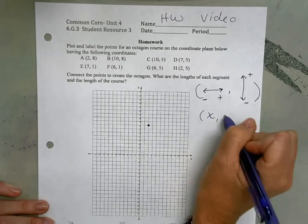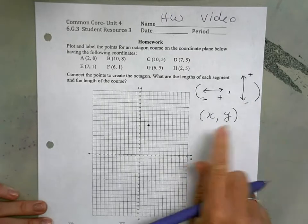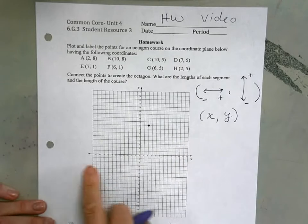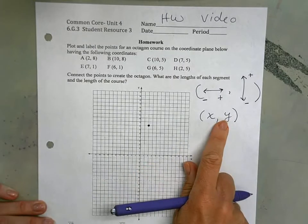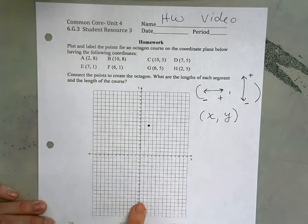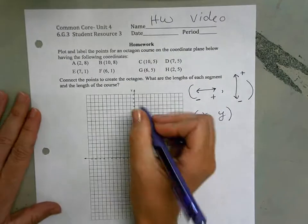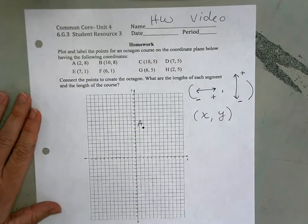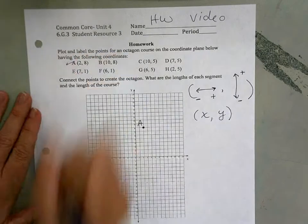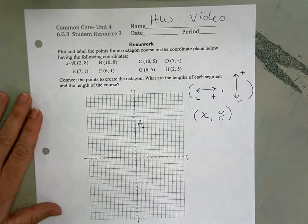And our second value tells us to go up if it's positive, or down if it's negative. And that's how we write down our ordered pairs, our x value along the x-axis, and then our y value along the y-axis. That's my point A, and so I don't get confused, I'm going to make sure I label it right away.